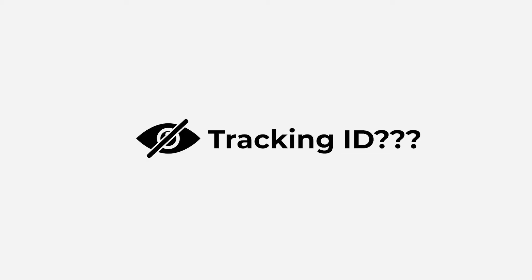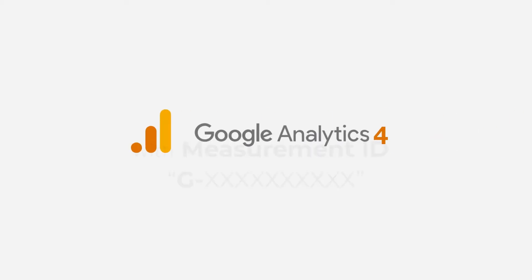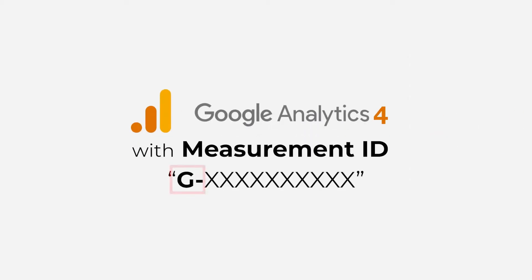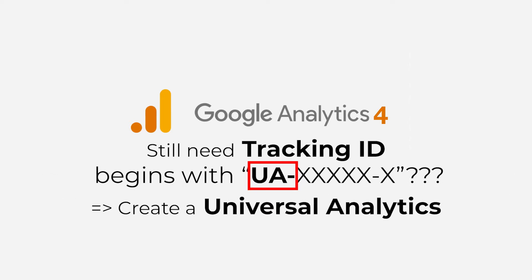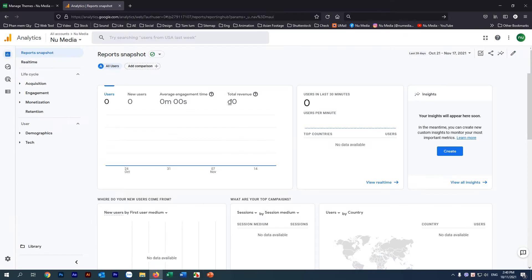If you don't see a Tracking ID, you have a Google Analytics 4 property with Measurement ID. But if you still need a Tracking ID — an ID that begins with UA — you will need to create a Universal Analytics property instead. Follow these instructions carefully to find your UA Tracking ID.